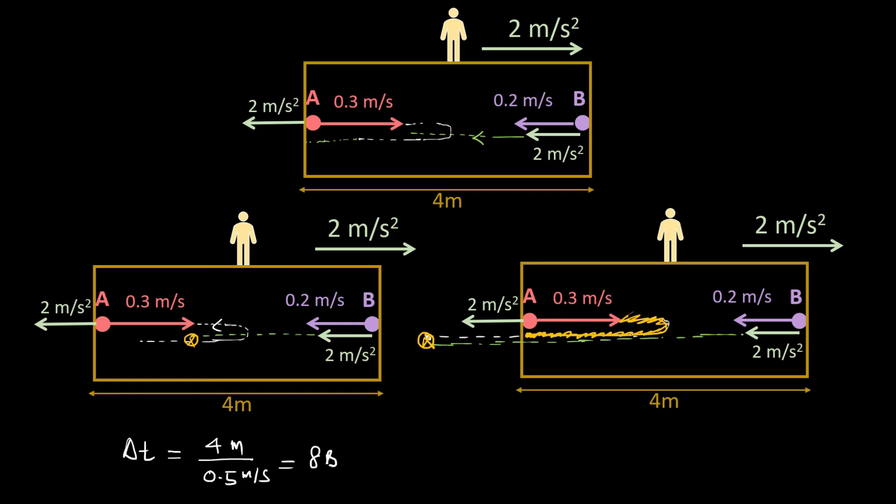So let's calculate this time. This time we can calculate very easily by the formula. This is a case of a turning motion. Suppose this time is delta t prime, equal to 2u divided by a, and u is 0.3 and a is 2.